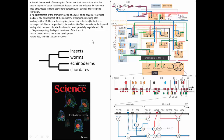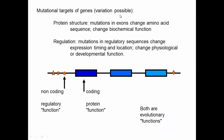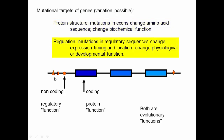Development and evolution go back and forth, and understanding one can help with understanding the other. Returning to genes, we can think about mutational targets: mutations in exons change amino acid sequence and biochemical function, while mutations in regulatory regions can change expression timing and location, changing the physiological or developmental function. Having a broader definition of what a gene is — including both regulatory sequences and trans-related sequences as evolutionary functions — provides a much more sophisticated understanding of the relationship between development and evolution than diagrams like Haeckel's in the 1800s.